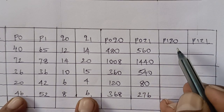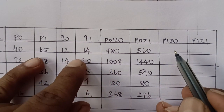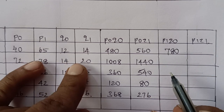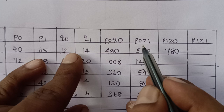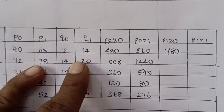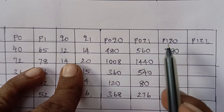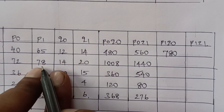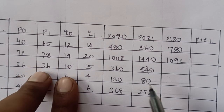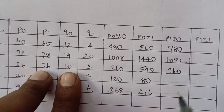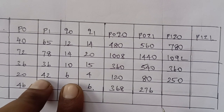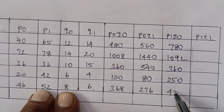This is P1 into Q1. P1 into Q1: 65 into 12, which is 780. This is P0 and Q1. P1 into Q1: 78 into 14, which is 1092. This is 36 into 10, which is 360. This is 42 into 6, which is 250. This is 52 into 8, which is 416.